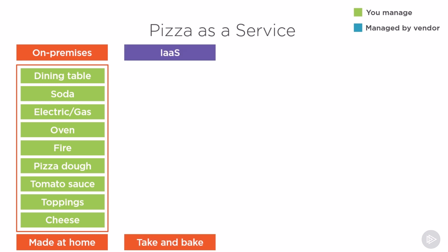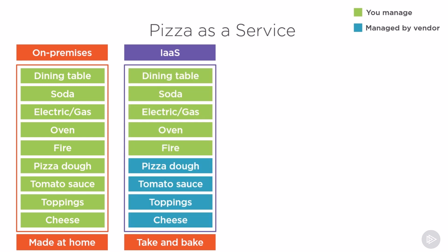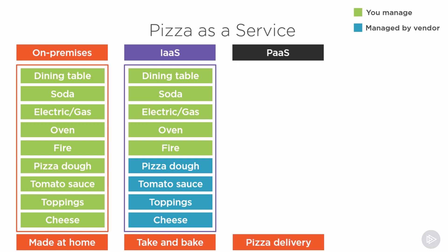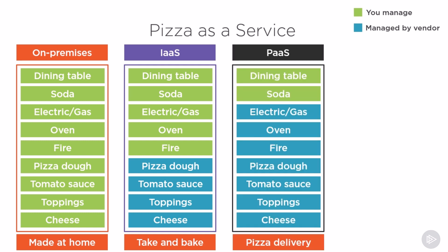Our Infrastructure as a Service model is similar to getting frozen pizza from the supermarket and cooking it at home. You pay for part of the service — the pizza dough, tomato sauce, toppings, cheese — but you still cook it yourself and eat it at your own table. Platform as a Service is similar to pizza delivery, where the pizza comes to you already made and hot, and you simply need to pour the drinks and eat it at your own table.